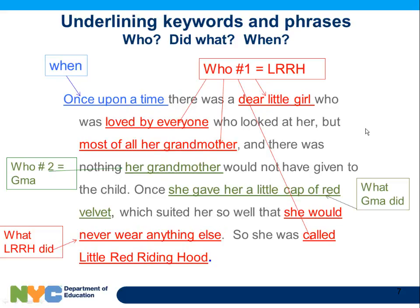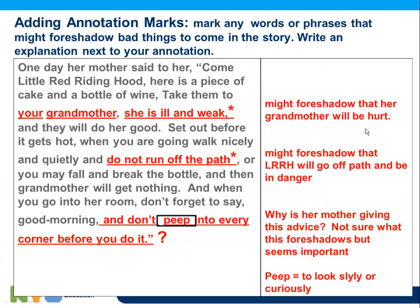Here's the whole point: underline when it happened, underline who's doing the action, underline who's number two. You know what Little Red Riding Hood did. And you can write on the side. Look at the continuation: 'Your grandmother, she's ill and weak.' Why is that important? It might foreshadow that the grandmother is going to get hurt. 'Do not run off the path.' Why is that important? It's going to foreshadow that Little Red Riding Hood might go off the path.